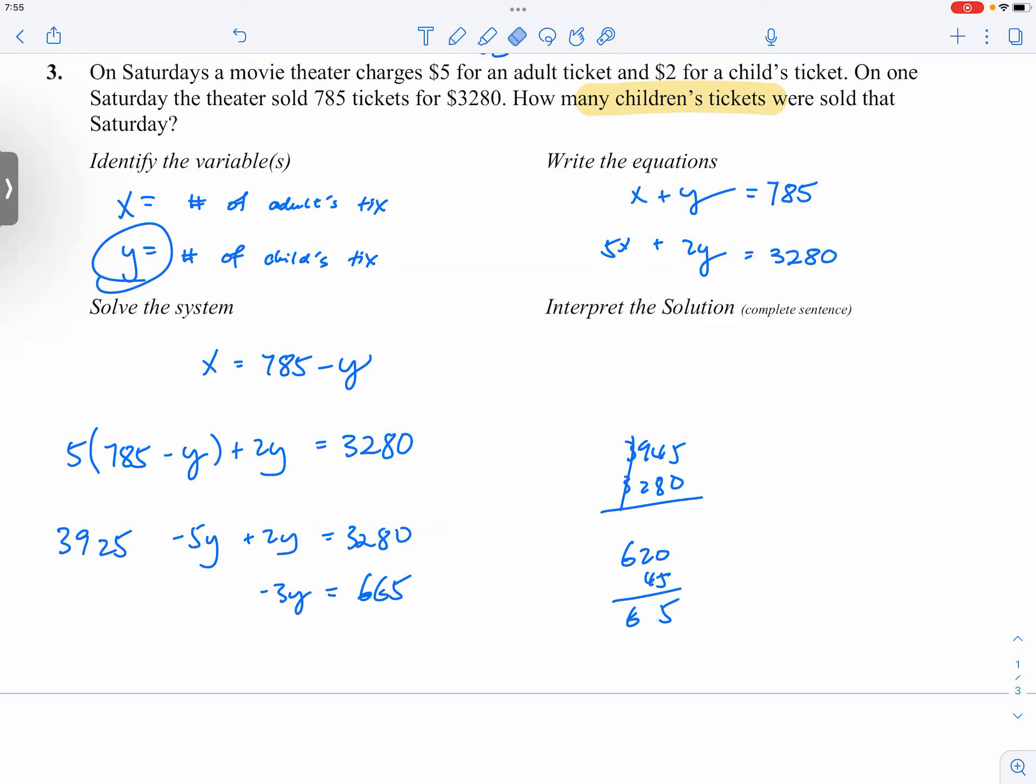So that would bring it down to 645. Okay, so negative 645. So -3y = -645, so y = 215.